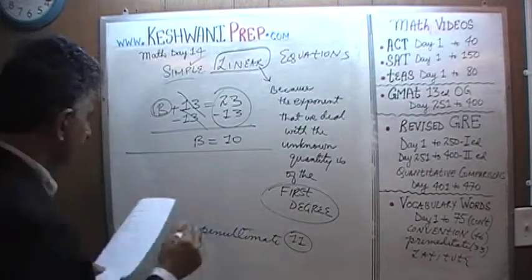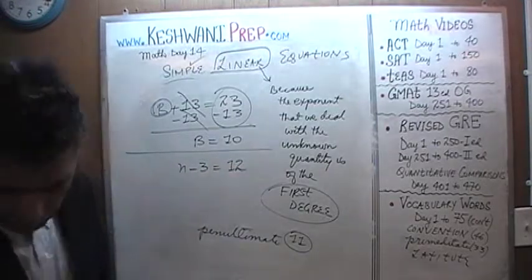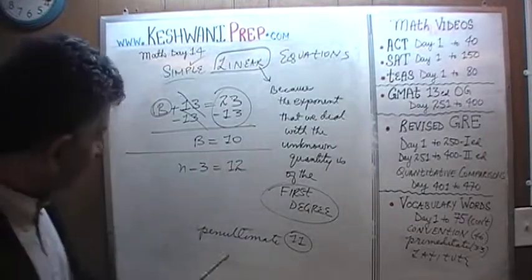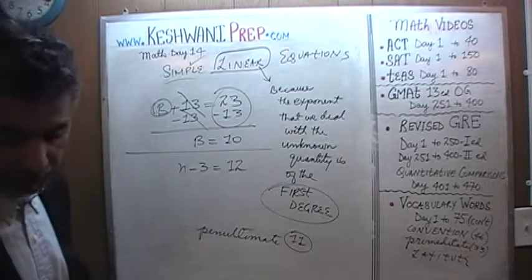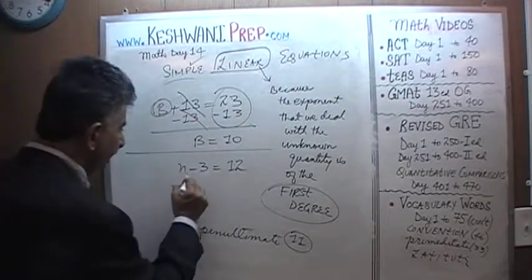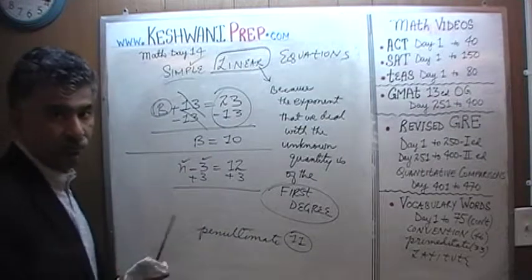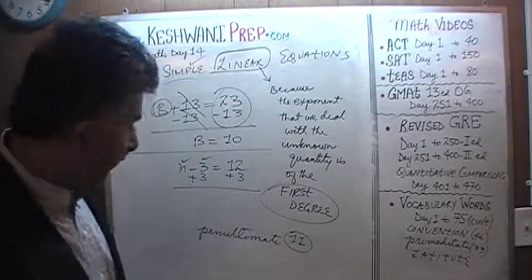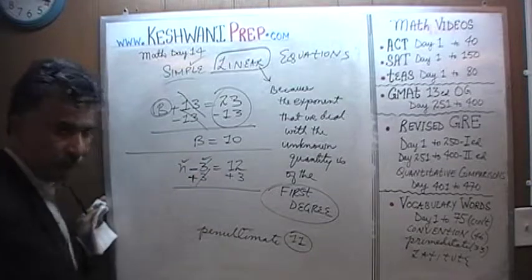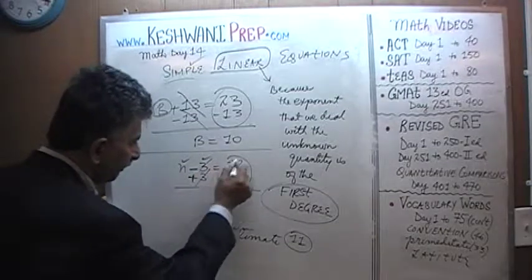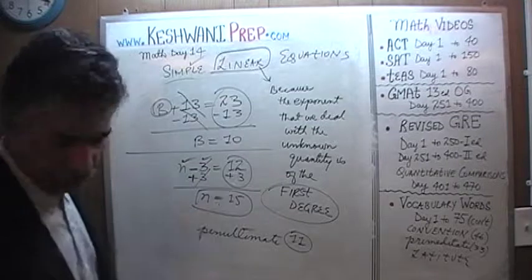And now the ultimate — the very last one: n minus 3 equals 12. What number minus 3 equals 12? Of course, 15 minus 3 equals 12. This time we add 3 to both sides. The negative 3 and the positive 3 cancel out, and n equals 12 plus 3, which is 15 — exactly what we said n should be.